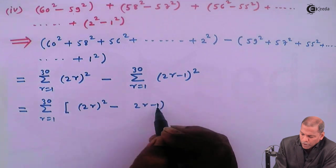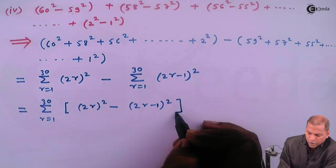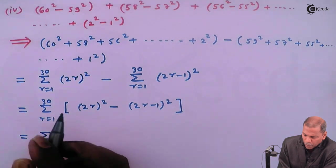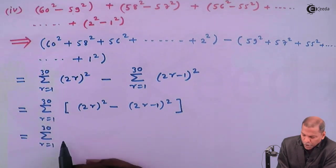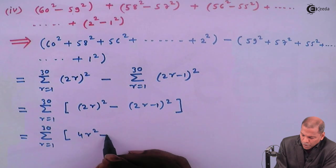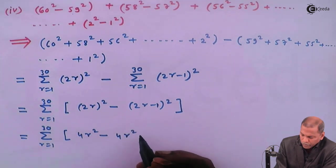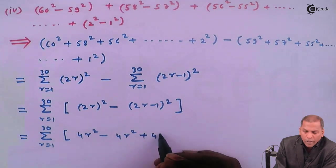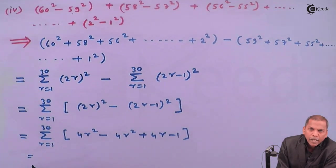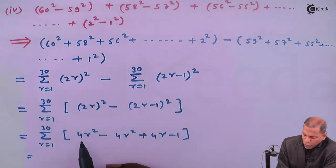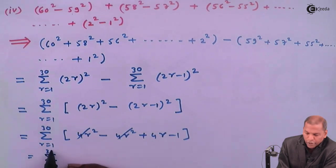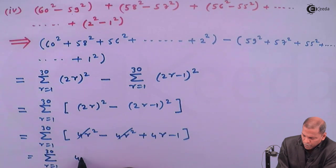The whole bracket is complete. So that equals summation r from 1 to 30. If we simplify the bracket, expanding (2r)² minus (2r minus 1)², after cancelling the 4r² plus and 4r² minus terms, we have summation r from 1 to 30 of (4r minus 1).